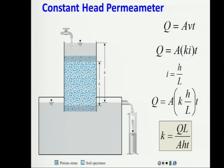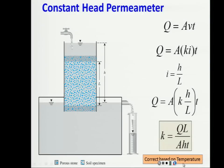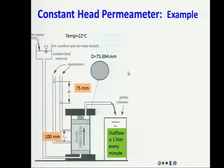After calculating k, you must correct it for temperature, because permeability must be expressed at 20°C. Measure the water temperature, go to the table, and apply the correction factor.